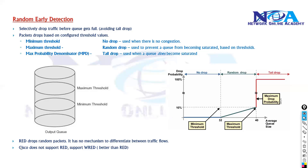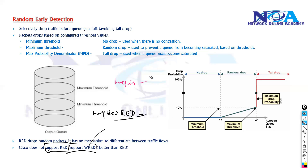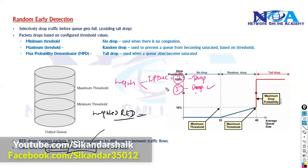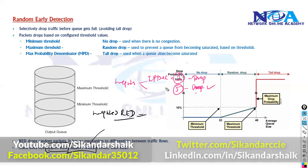Because of this limitation, Cisco does not support plain RED. Instead, we use a similar mechanism called Weighted Random Early Detection (WRED). The mechanism is almost the same, but WRED adds weights — for example, if the precedence value is 1, those packets are more likely to be dropped compared to a precedence value of 5. So WRED drops low priority traffic preferentially over high priority traffic.